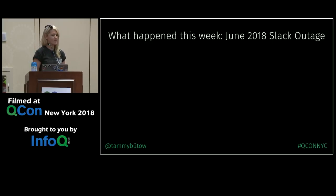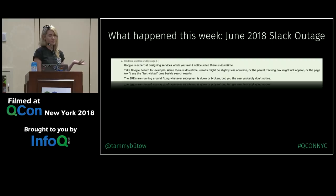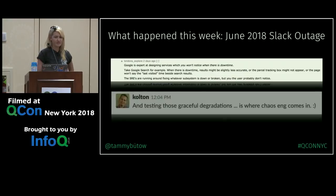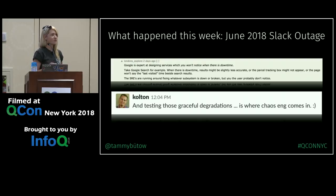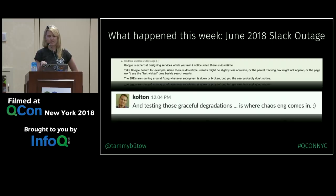What happened this week? We had the June 2018 Slack outage. There was an interesting piece on Hacker News: Google is an expert at designing services where you won't notice when there is downtime - results might be less accurate, or a box might not appear, but you probably won't notice as a user. Testing those graceful degradations is where chaos engineering comes in - you can make sure that if failure strikes, you're prepared and can see what graceful degradation looks like to your customers, not just at the system level but in the UI.